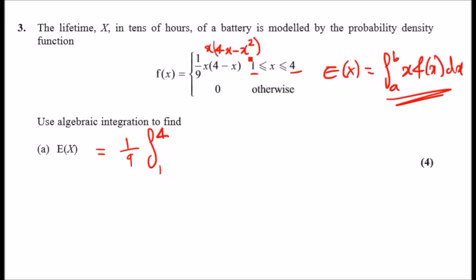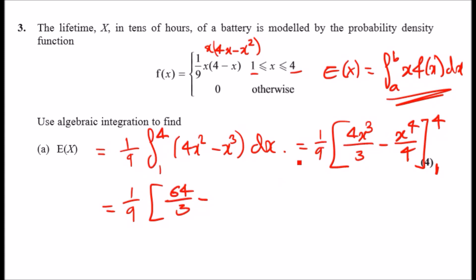This is quite straightforward. Ignoring the 1/9, integrating this you should get 4x³/3 minus x⁴/4, then evaluate from 1 to 4. Plug in 4, then plug in 1. The final result should be 64/3 minus...times 1/9. You should get 9/4 as your result. Pretty straightforward.